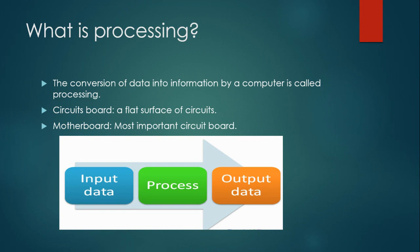What is processing? The conversion of data into information by a computer is called processing. When data is not processed it is called raw data, and after processing it is called information. So we can see the difference between unprocessed data and processed data — that is raw data versus information.